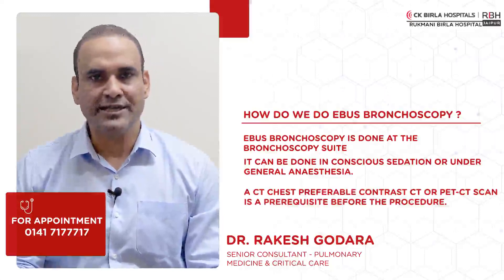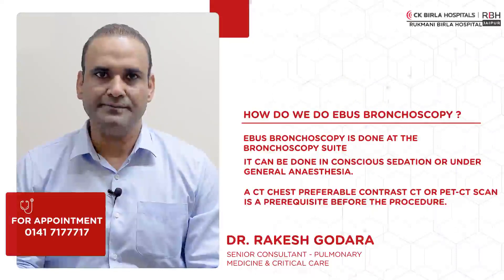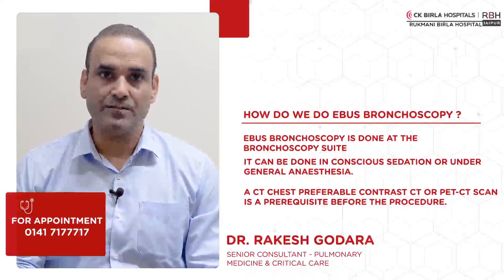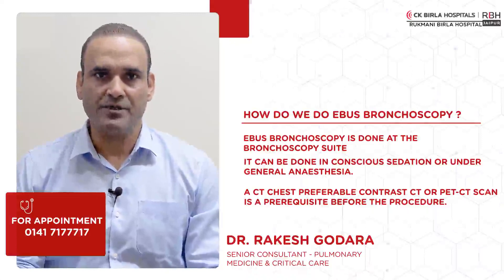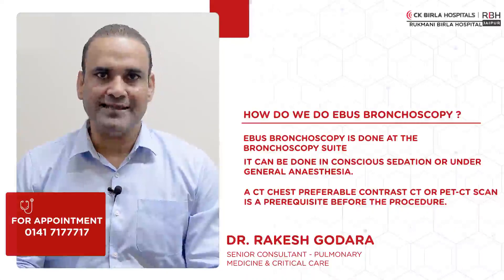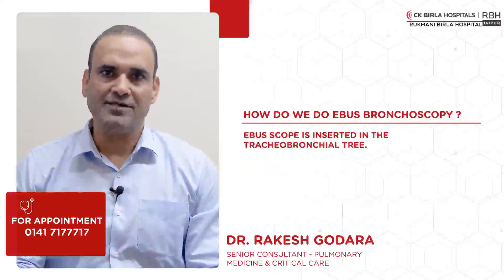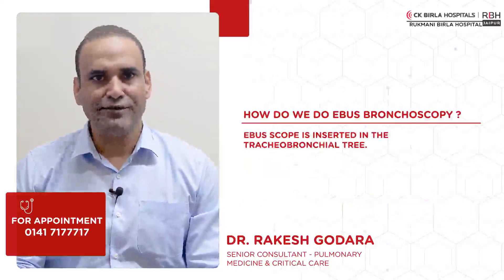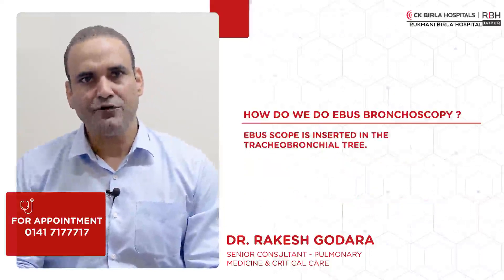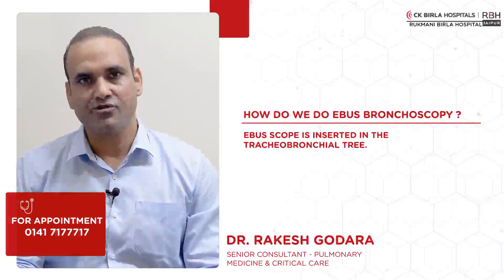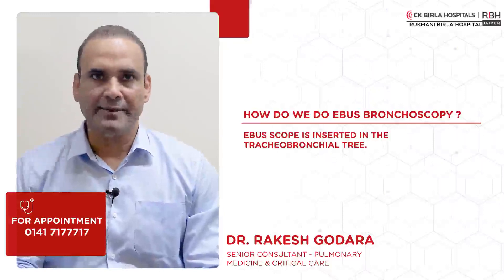Contrast CT is more preferable. CT chest helps to note down the abnormal lymph nodes — their size, location, character, and any abnormal lesion — before starting the procedure. In this procedure, the EBUS scope is inserted into the tracheobronchial tree. Then with the ultrasound probe, we can see and measure the lymph nodes and mass lesions outside the airway, that is transbronchially in the mediastinum.